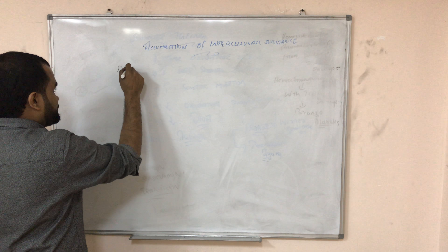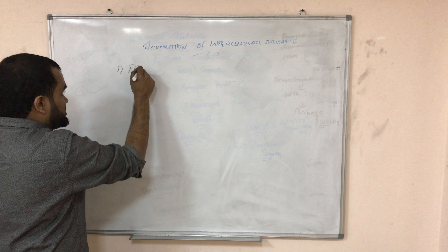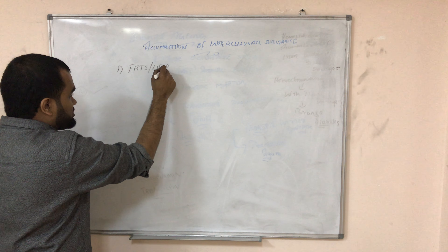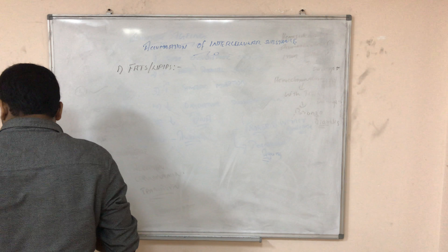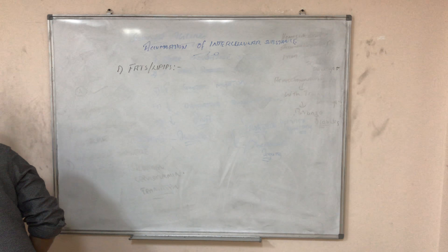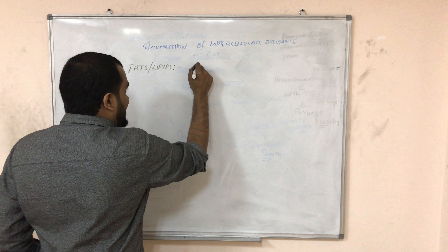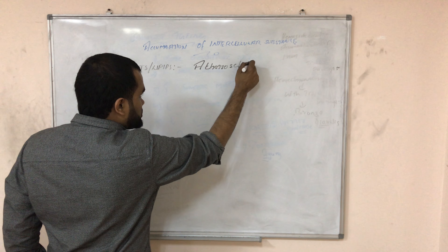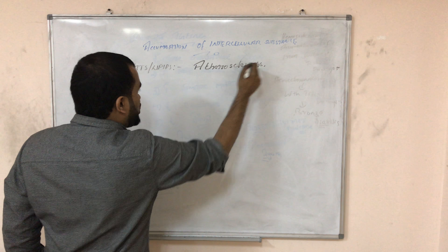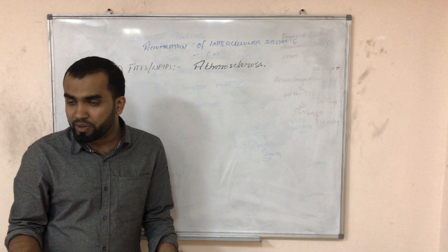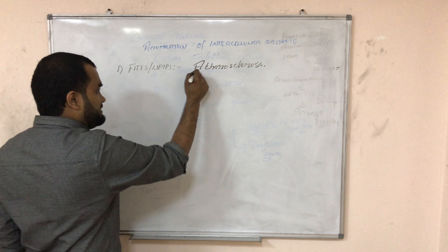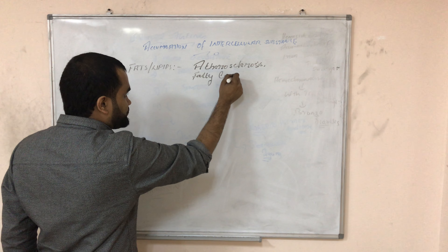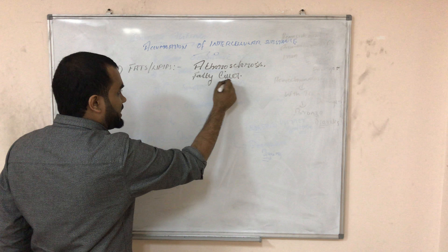Taking the case of fats or lipids first: when fats or lipids get accumulated, you will have atherosclerosis affecting the heart, or your liver becomes a fatty liver.